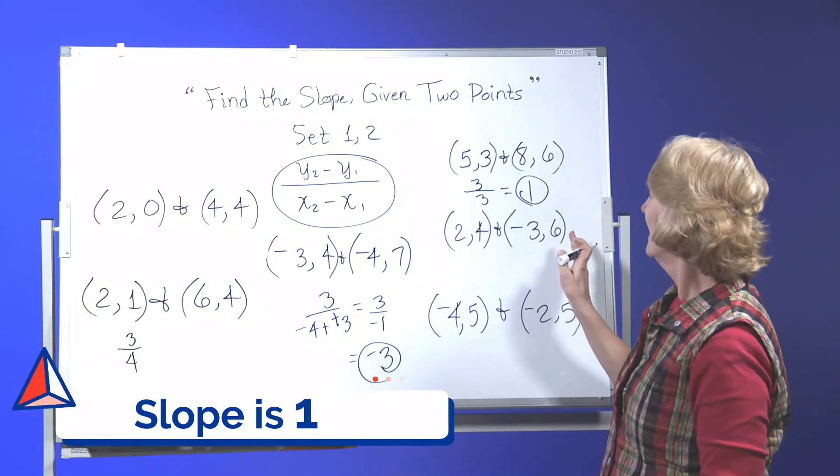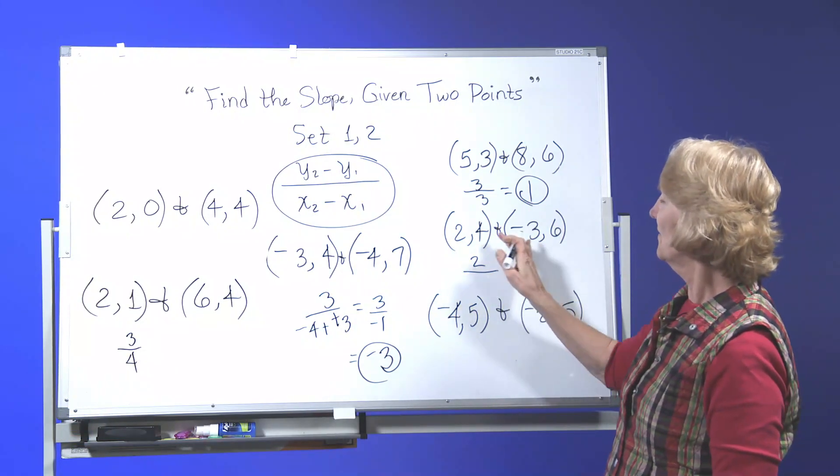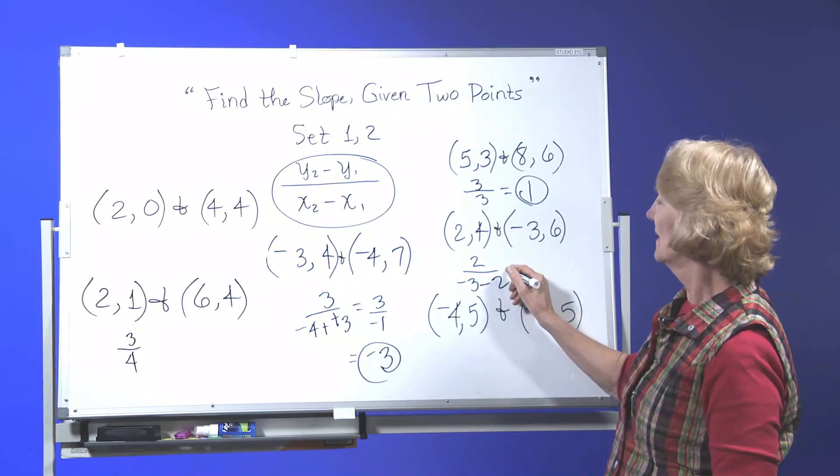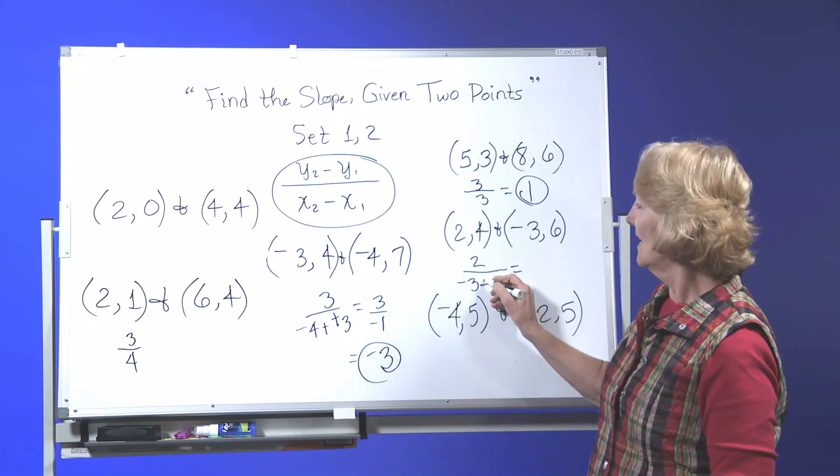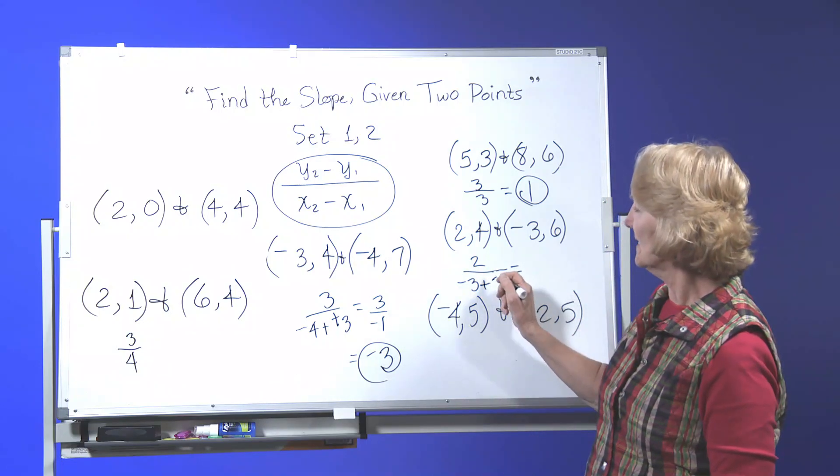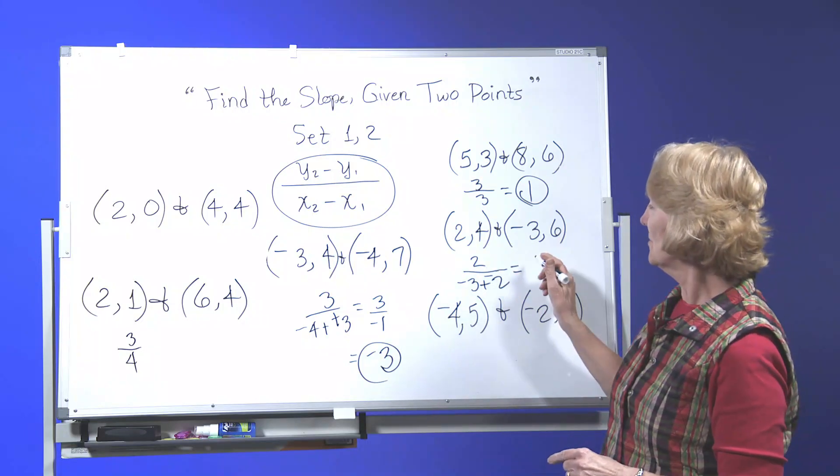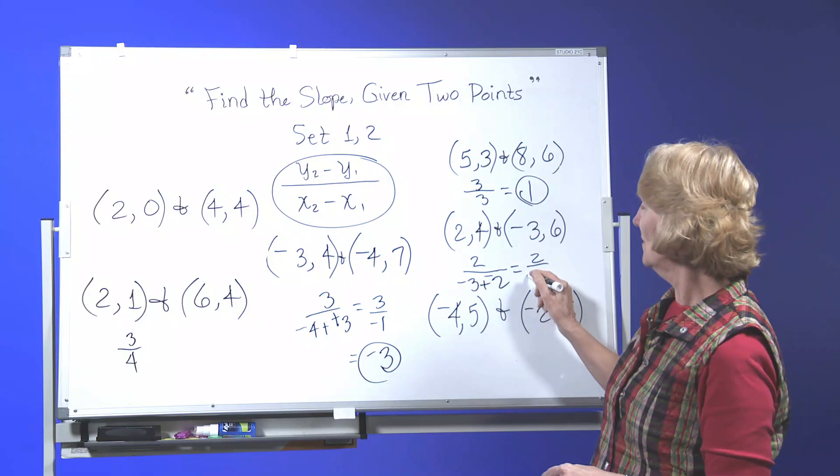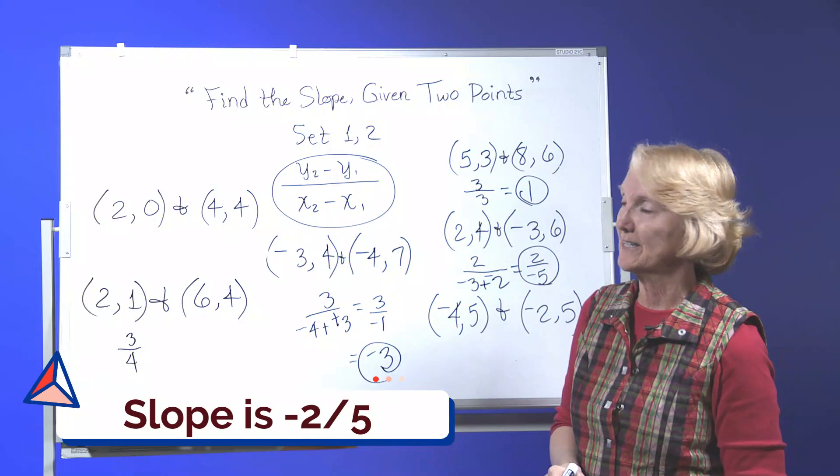Next one, 6 minus 4 is 2. Negative 3 minus 2. Subtraction is just like addition of the opposite. So we add and that's a positive 2 so we make it be a negative 2. 2 stays the same in the numerator. Negative 3 plus negative 2 is negative 5. And that's your slope, negative 2 fifths.